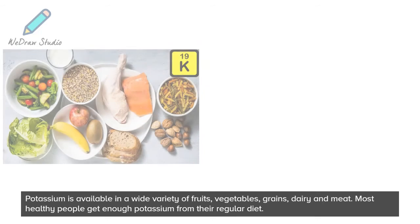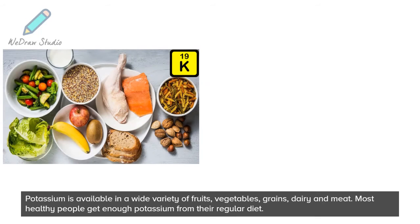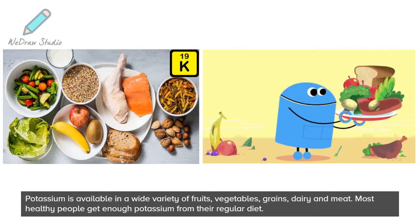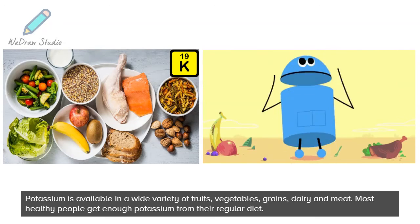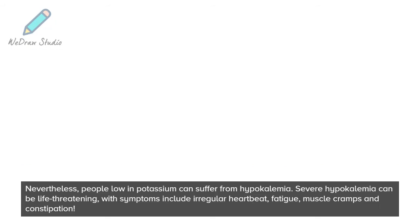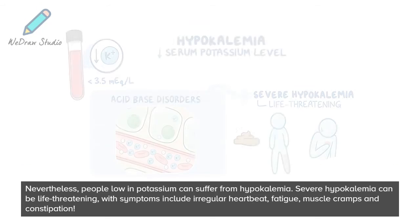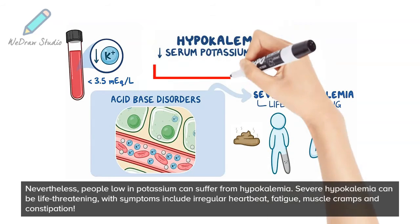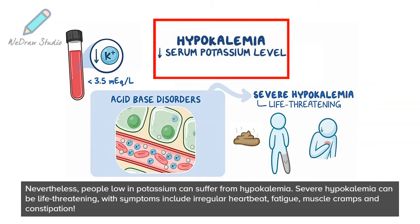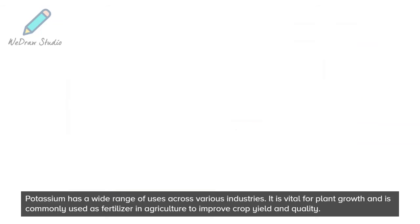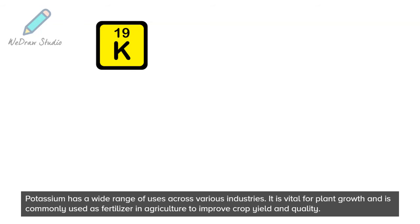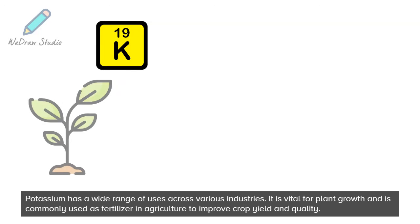Potassium is available in a wide variety of fruits, vegetables, grains, dairy, and meat. Most healthy people get enough potassium from their regular diet. Nevertheless, people low in potassium can suffer from hypokalemia. Severe hypokalemia can be life-threatening, with symptoms including irregular heartbeat, fatigue, muscle cramps, and constipation.